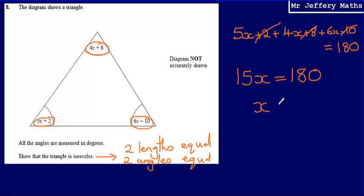Then I can figure out what x is going to be equal to. So to work out what x will be equal to, I'm going to take 180 degrees and divide that by 15, and 180 divided by 15, that's going to give me an answer of 12. So I've worked out that x will be equal to 12.